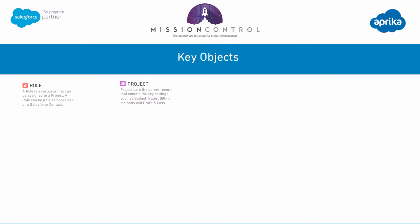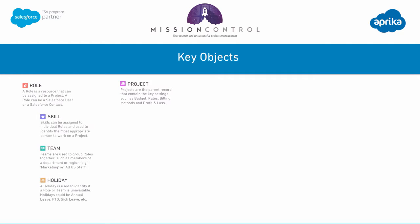The key objects that you use within Mission Control are outlined here. The two principal ones are the role and the project. The role is the record for the individual person that will be a resource on a project. Against that role you can assign them to skills, you can assign them to teams, and you can also track any holidays they might have, whether that's annual leave, PTO, sick leave, etc.